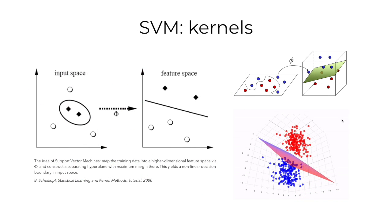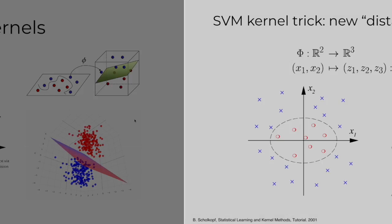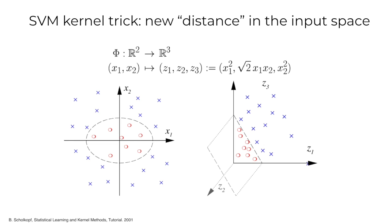The original SVM algorithm was invented by Vladimir Vapnik and Alexei Chervonenkis in 1963. Vapnik suggested a way to create nonlinear classifiers by applying the kernel trick to a maximum margin hyperplane. The current standard incarnation of SVM using soft margins was proposed by Corinna Cortes and Vapnik in 1993 and published in 1995. This idea of support vector machines is to map the training data into a higher dimensional space feature via phi and construct a separating hyperplane with maximum margin there.